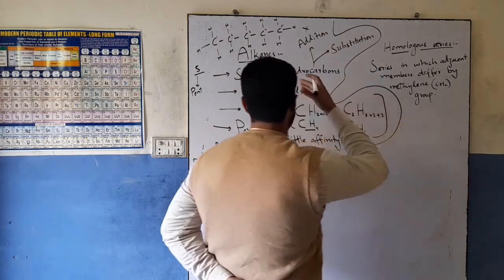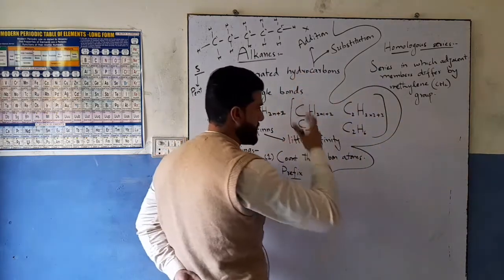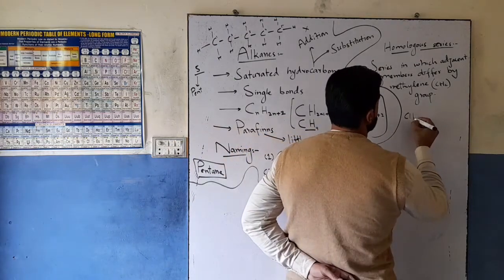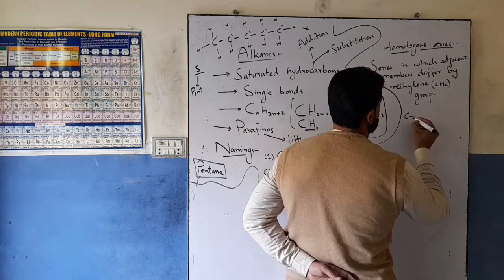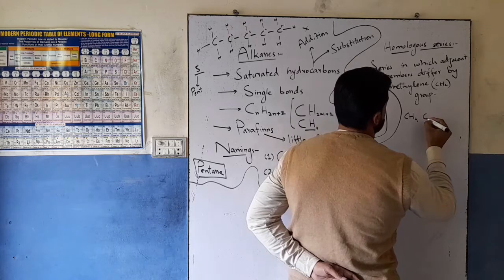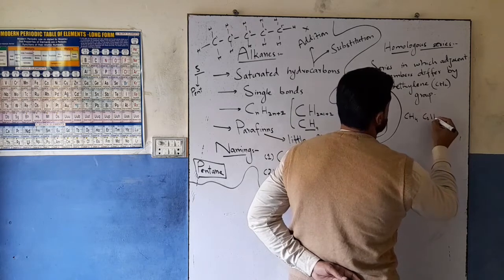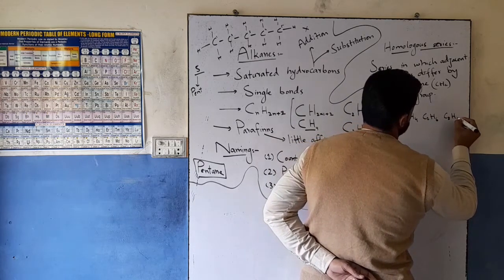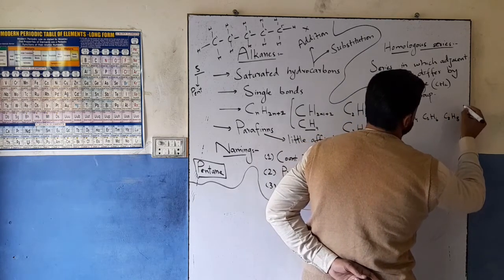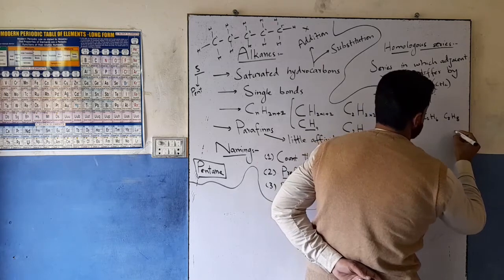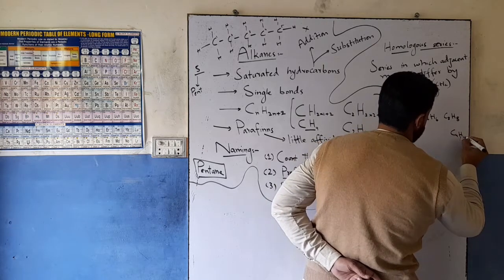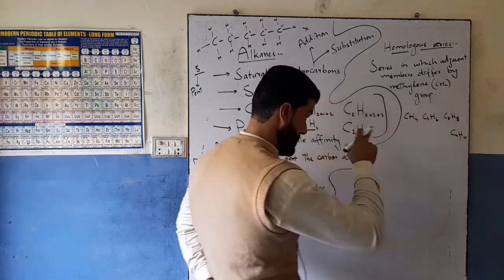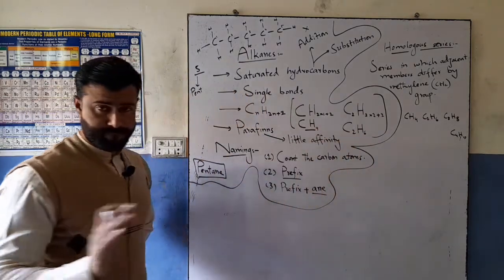This is an alkane series. CH4 is a member. C2H6 is next. C3H8 is next. C4H10 follows. The general formula is CnH2n+2.